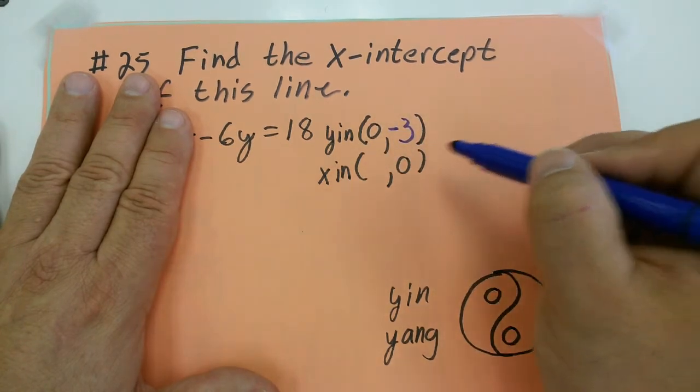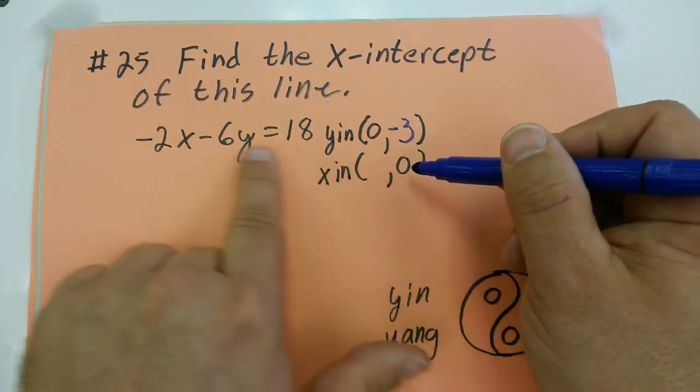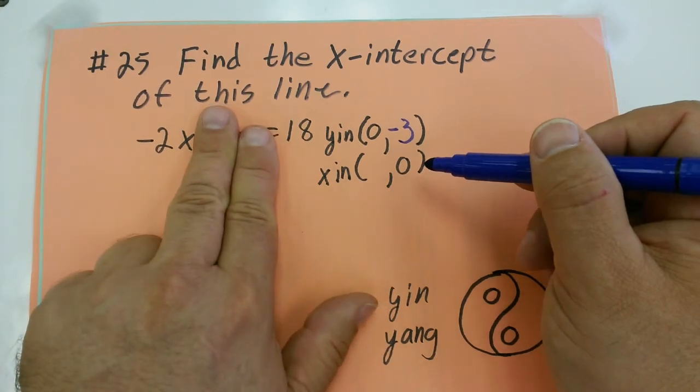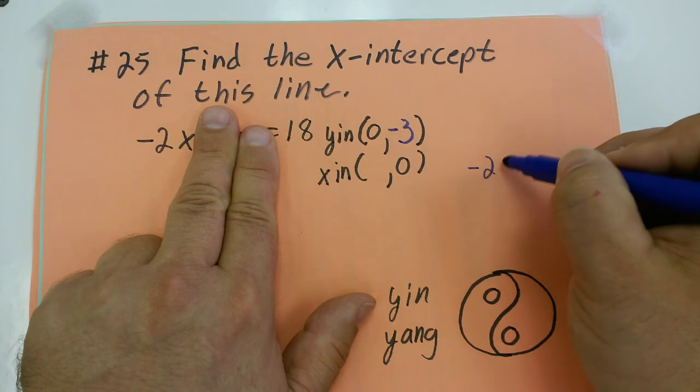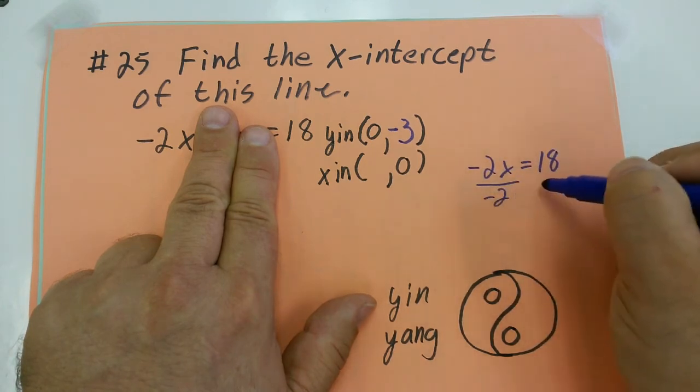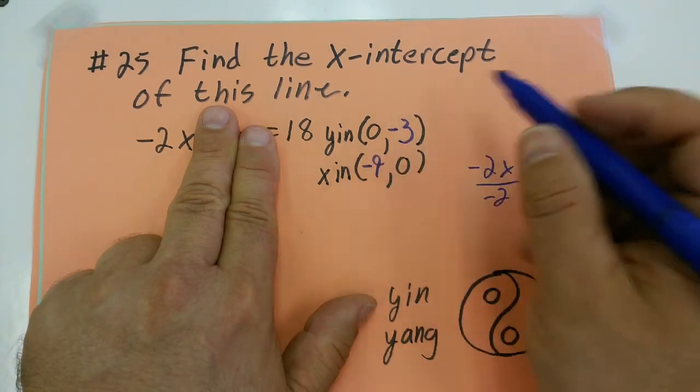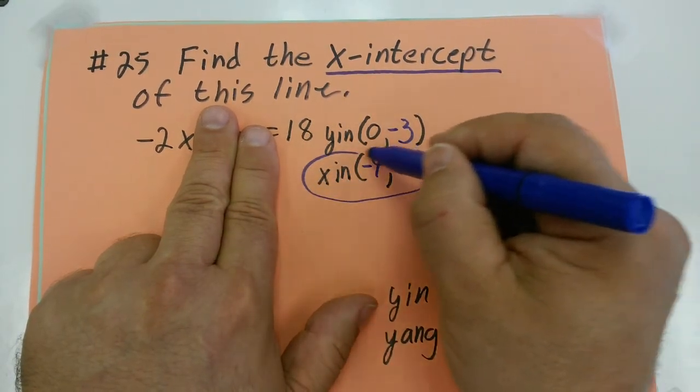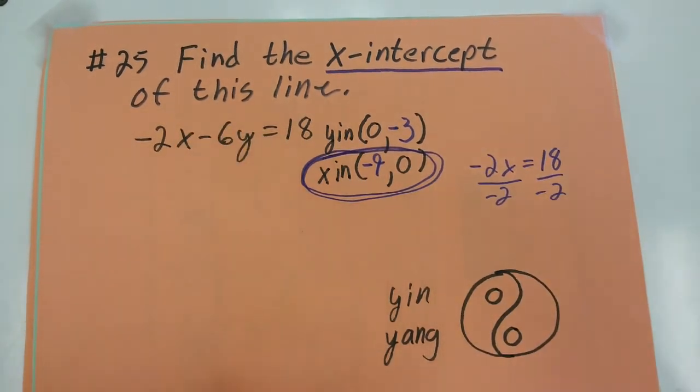But that's not what it's asking. It's asking for the x-intercept. So by that same rationale, when y equals 0, you get 6 times 0 is 0. You can just cover up the y-value, and that leaves you with negative 2x equals 18. To solve for x, divide both sides by negative 2, which gives you negative 9. So (-9, 0) is my actual answer for number 25.